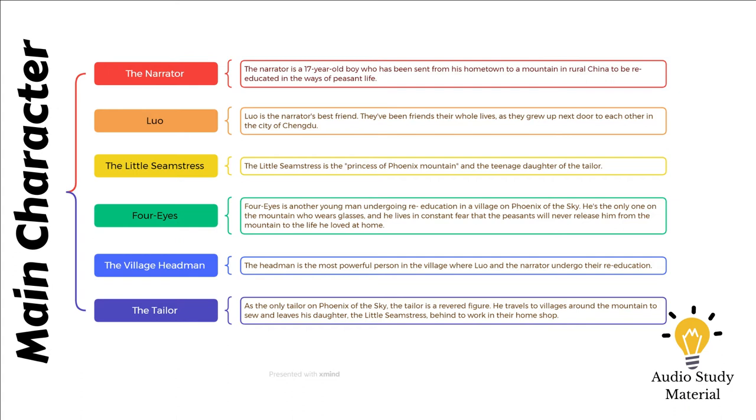A few days later, the tailor comes to the village and decides to stay with Luo and the narrator. Before they retire on the first night, the tailor requests a story from the boys. The tailor is captivated by the Count of Monte Cristo when the narrator begins to narrate the story. The narration lasts nine nights.